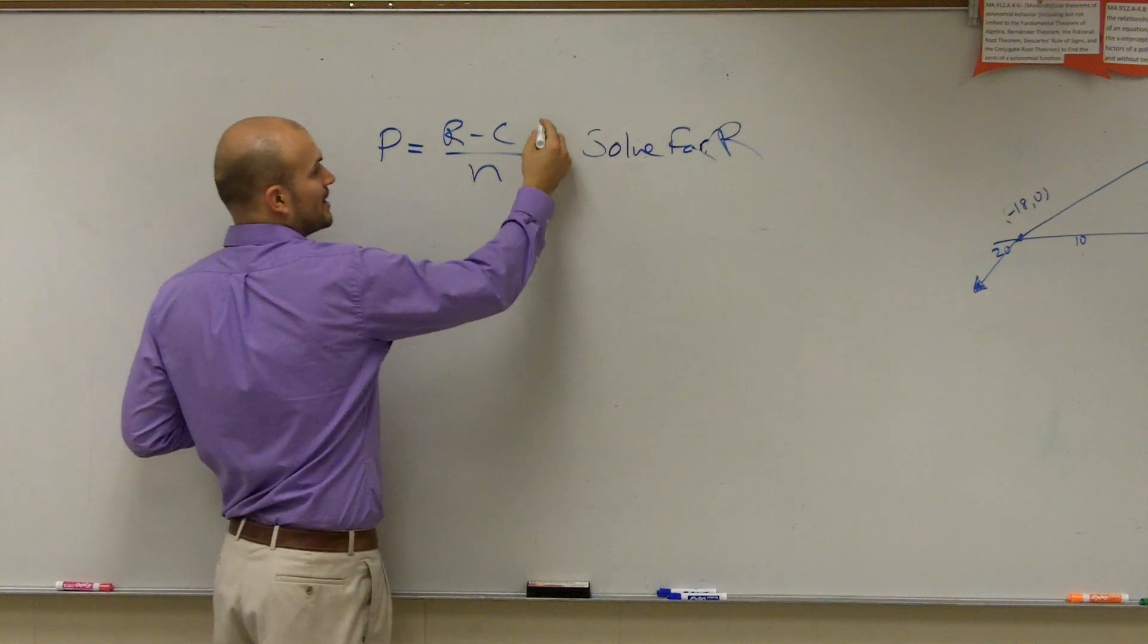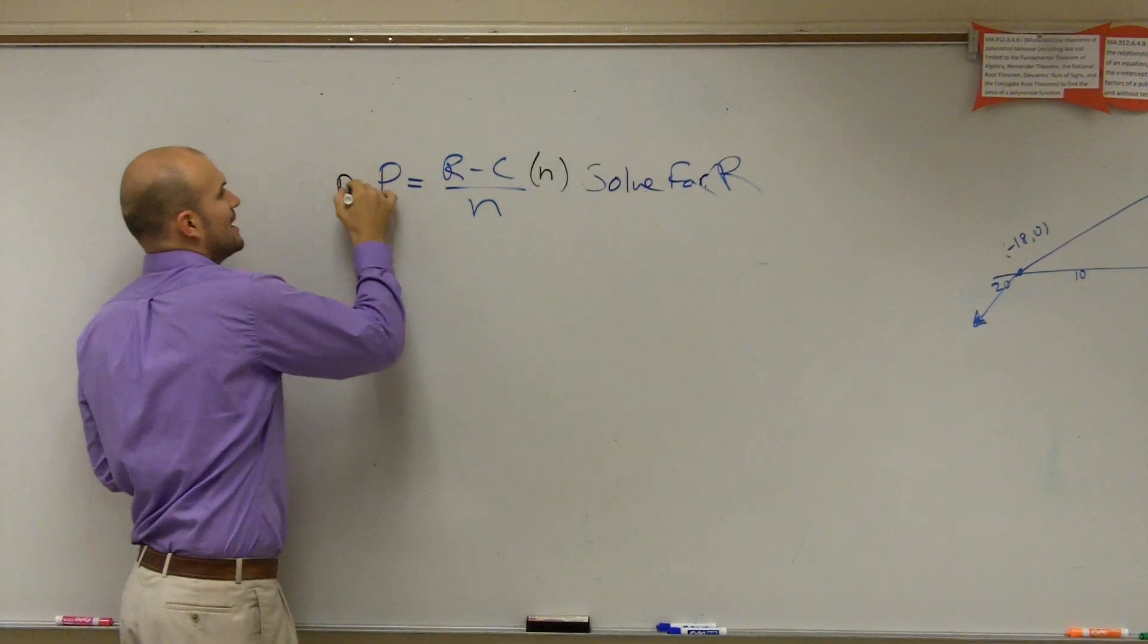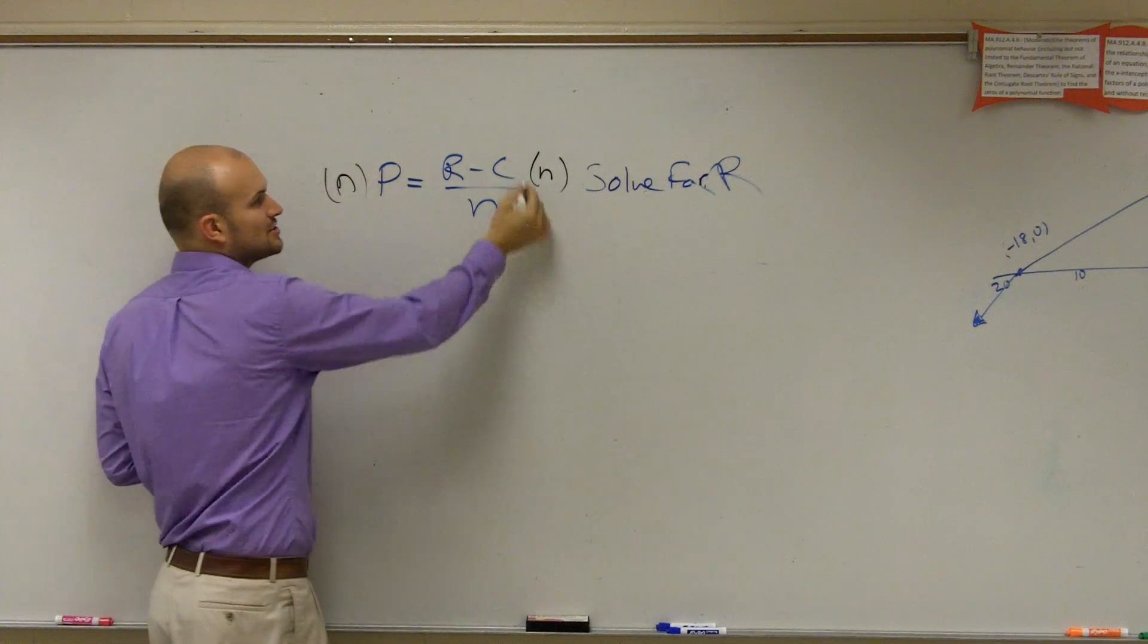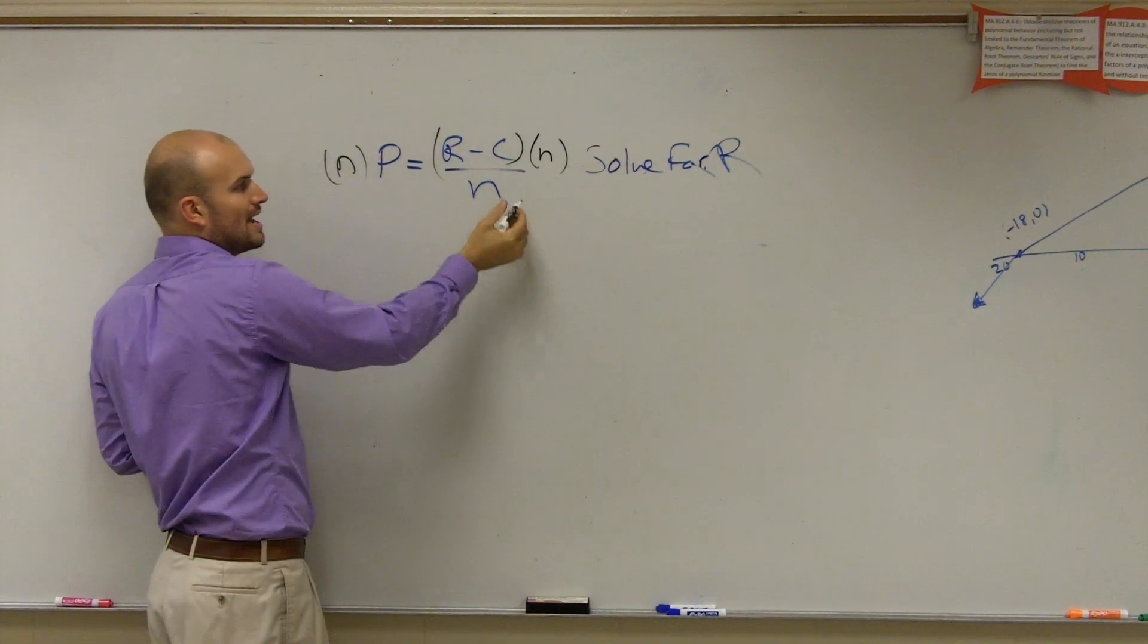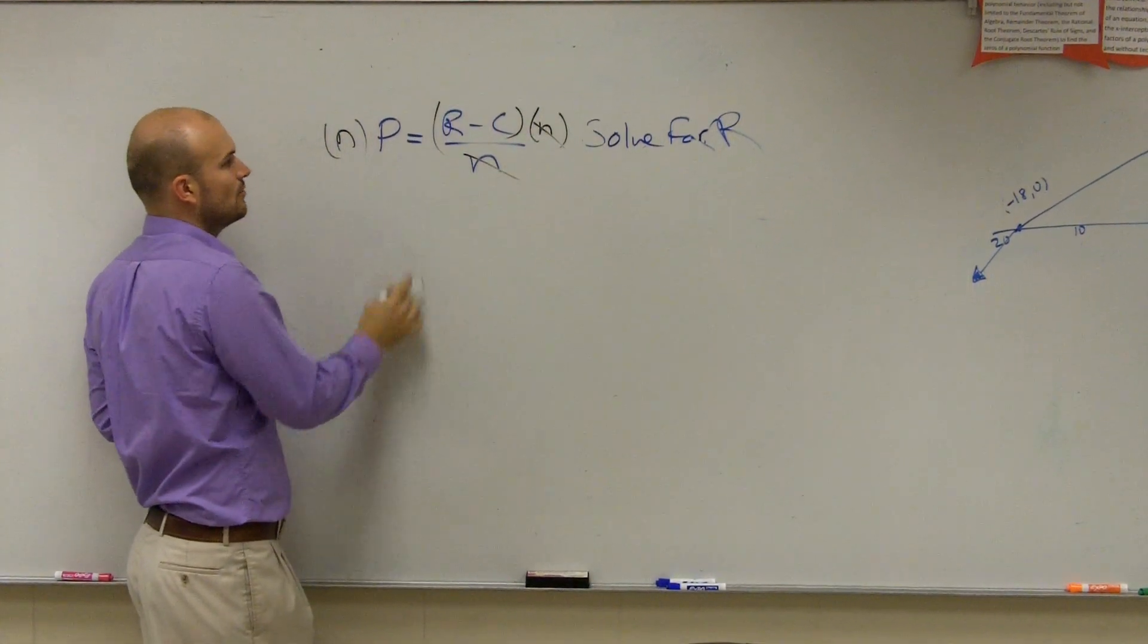So the first thing, we have the n on the bottom, right? Multiply n on both sides. Make sure, ladies and gentlemen, you're multiplying this whole part by n. These are going to divide into one.